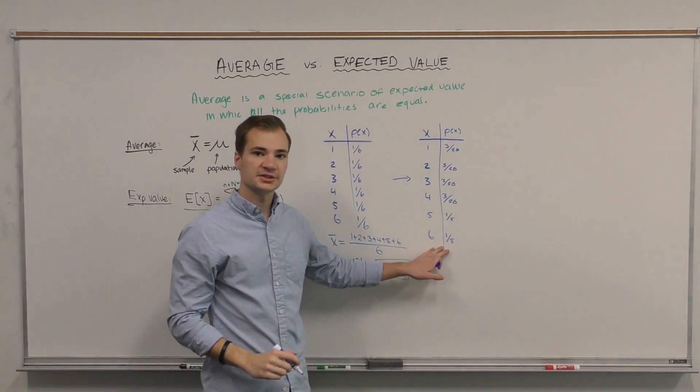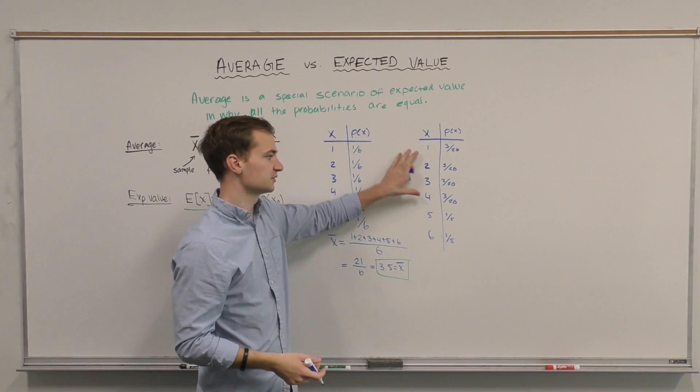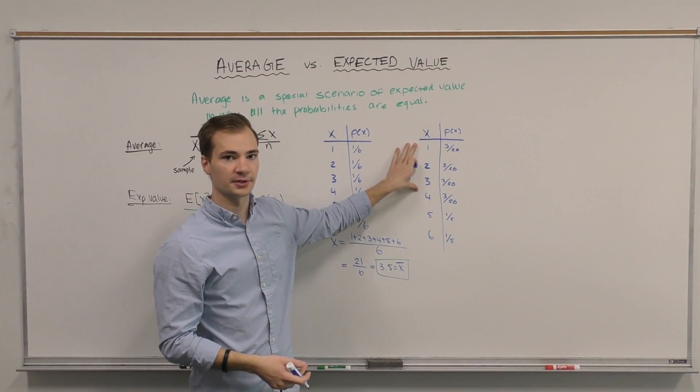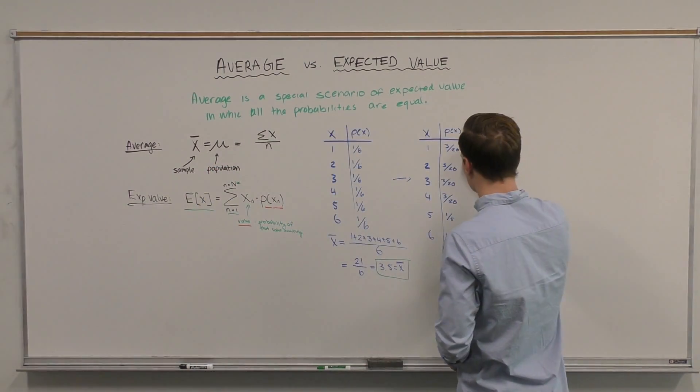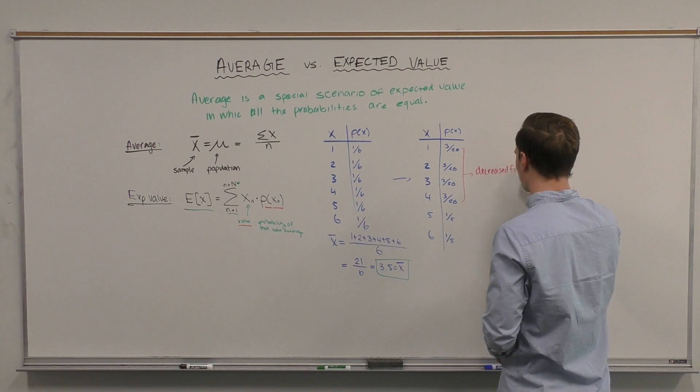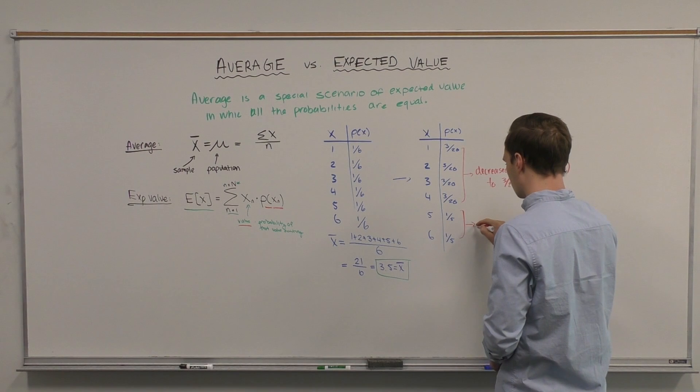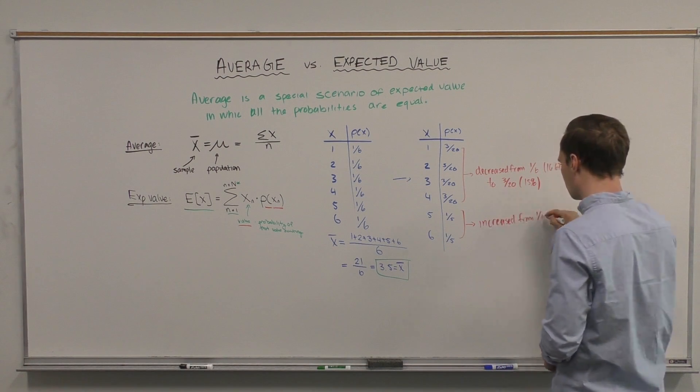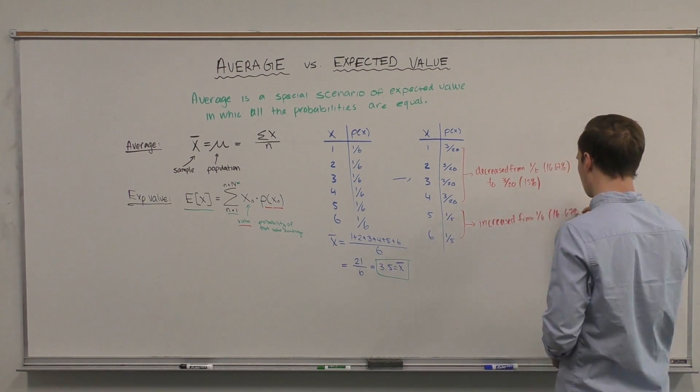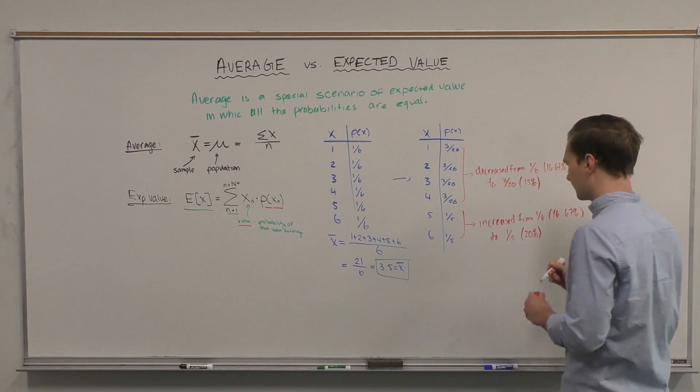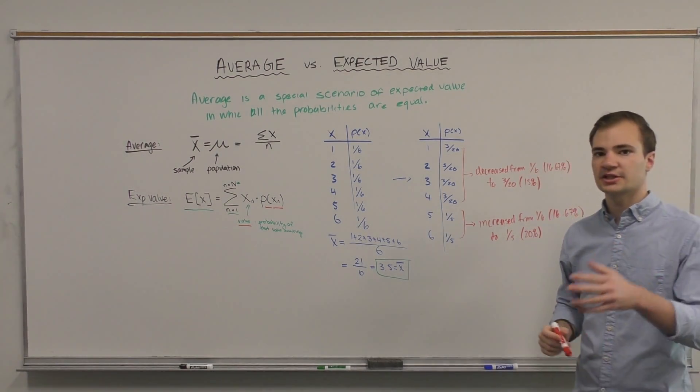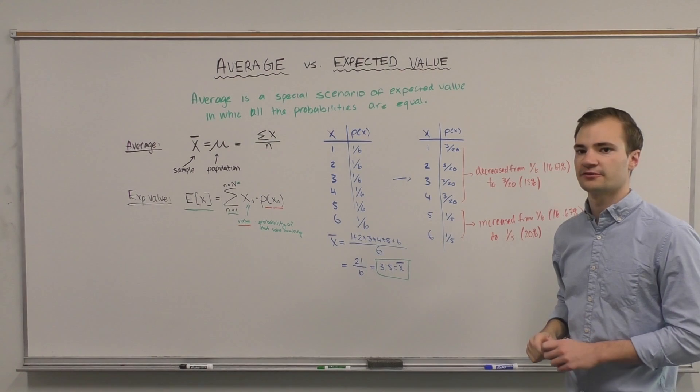I increased this from a 1 in 6 to a 1 in 5 chance and subsequently lowered the remaining value. Now let's look at how this will affect our expected value.